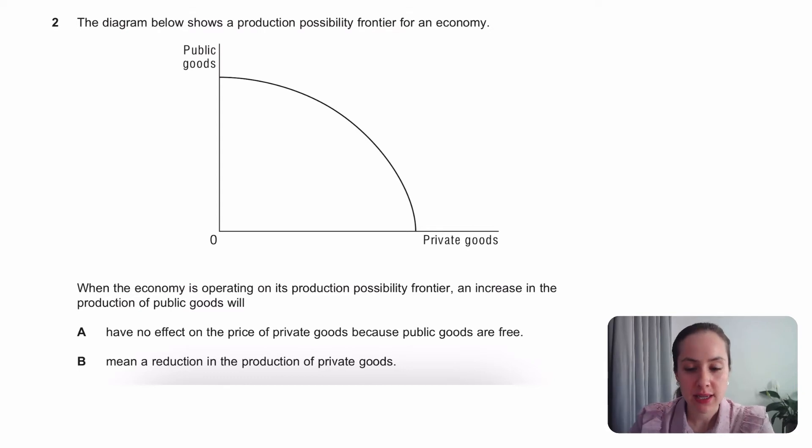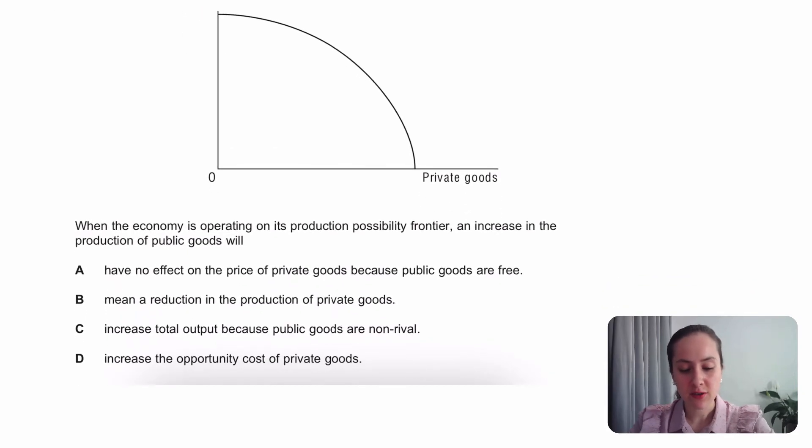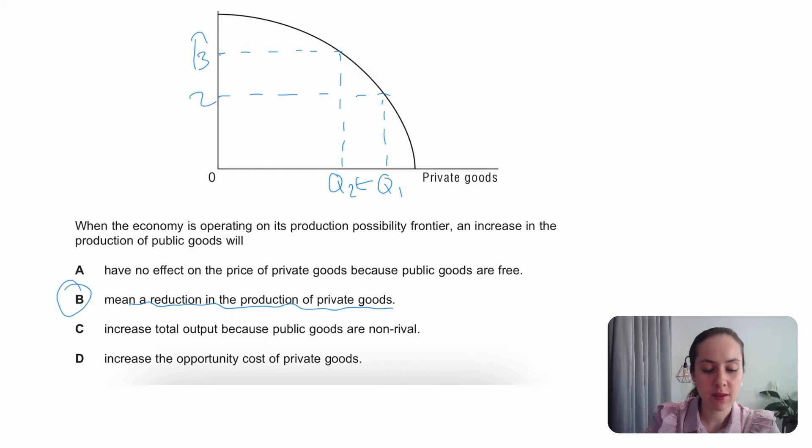Next we have a PPF and when it's operating on its production possibility frontier, an increase in the production of public goods. If you increase the production of public goods, so let's say you go from two to three, it means you're going to sacrifice some private goods. You will go from Q1 to Q2 private goods. So I'm looking for some kind of a trade-off. Does it mean a reduction in the production of private goods? That looks to be the answer.